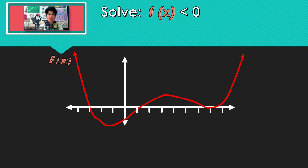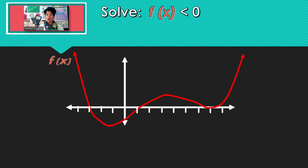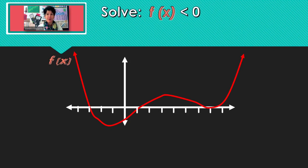We're just making some subtle changes. This time our function is less than 0. So if we want to solve by looking at the graph, f of x — that's the y — is less than 0.